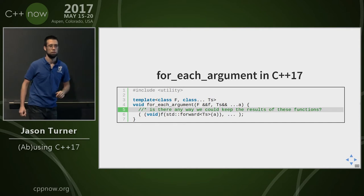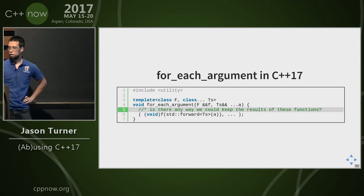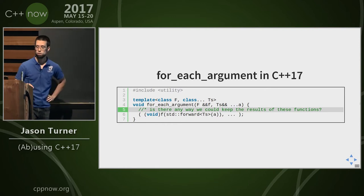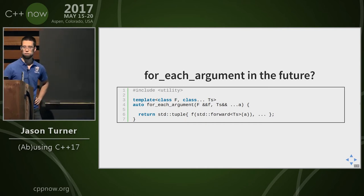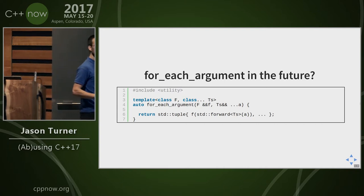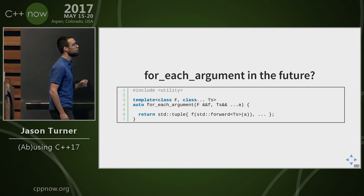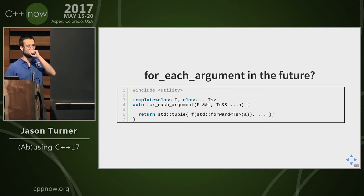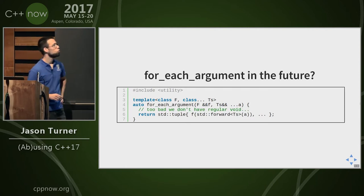Is there any way to keep the results of these function calls if they return values? You could initialize an array out of them, but you don't know what the types are going to be — an initializer list requires the same result type. We could throw it into a tuple, but we're not actually doing a C++17 fold expression anymore — we're just doing a variadic expansion in the C++11 sense. That's a good point, but we're taking advantage of tuple which was also added in C++11.